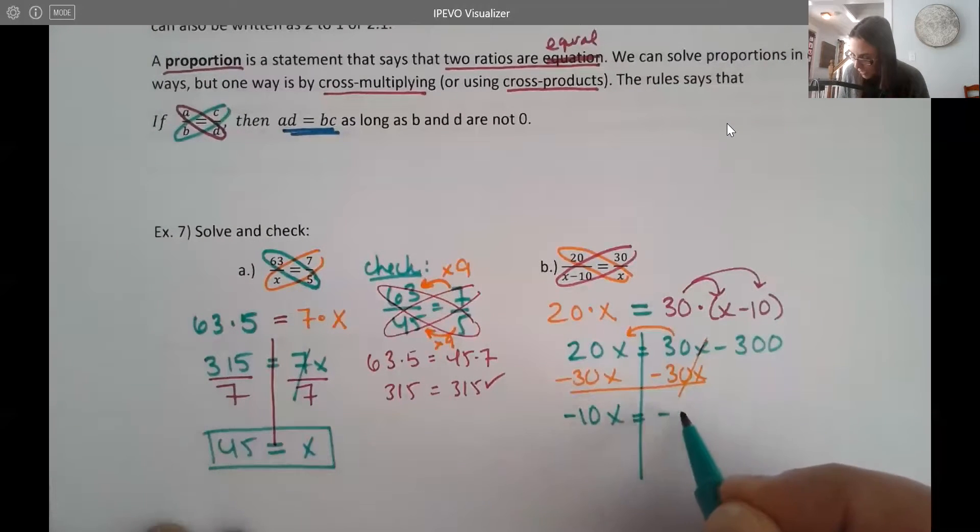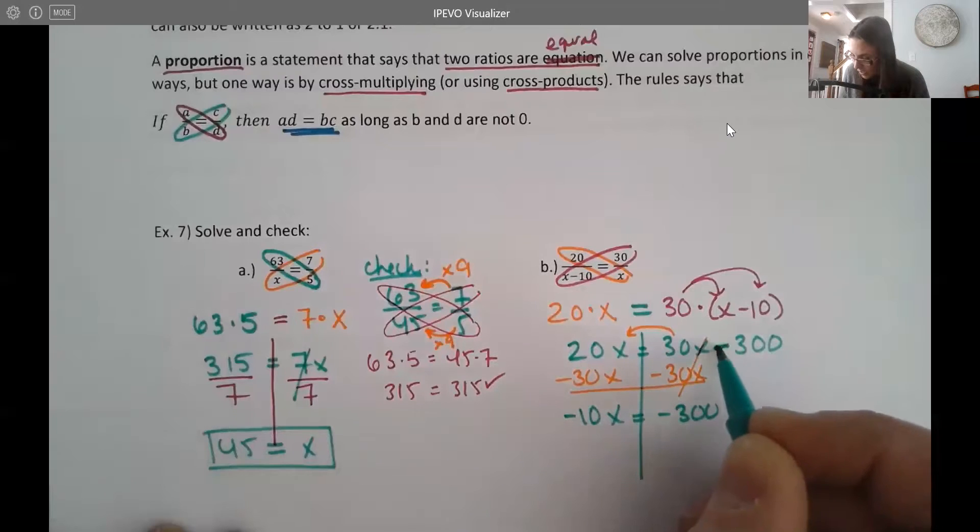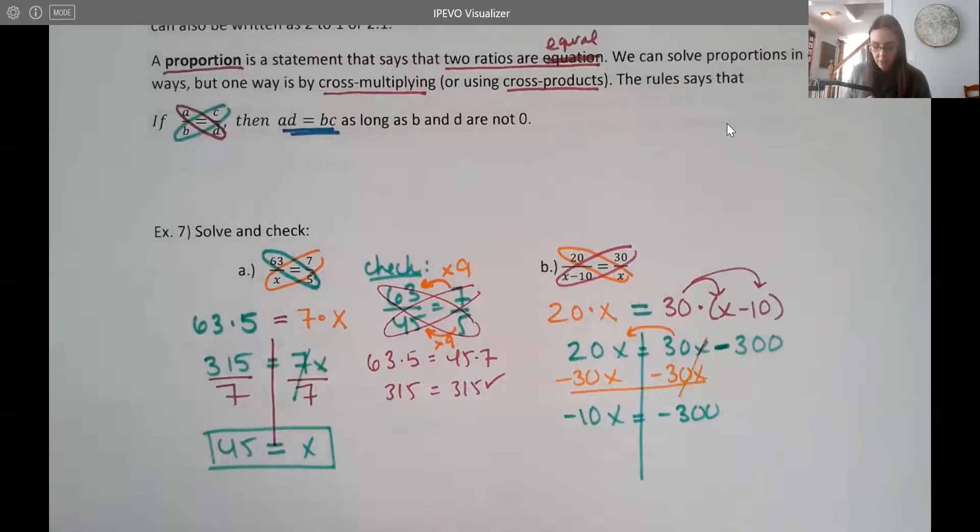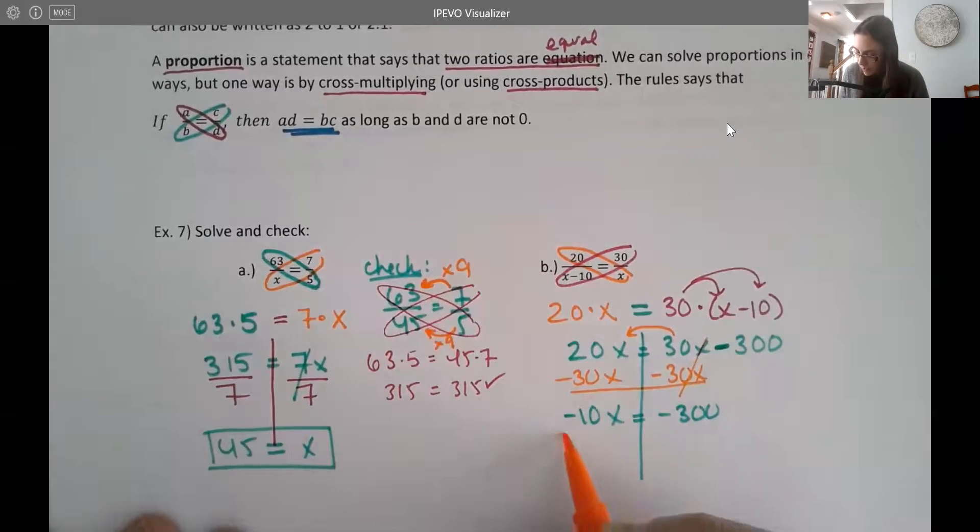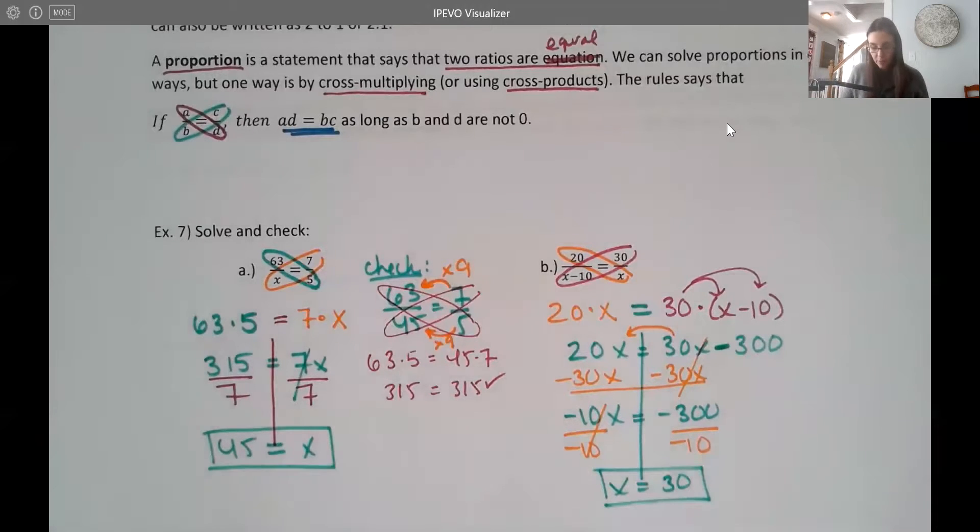Negative 10X equals negative 300. Again, watch those signs. There's a minus there, which is a negative. And then I'm going to divide both sides by negative 10. And I get X equals 30.